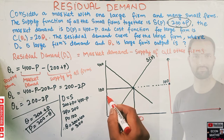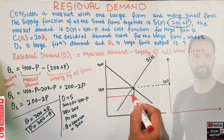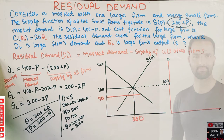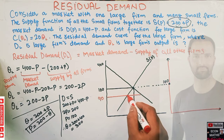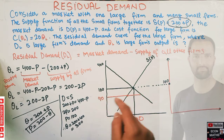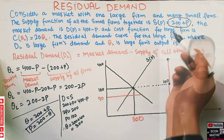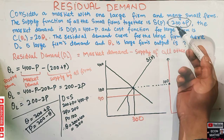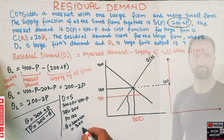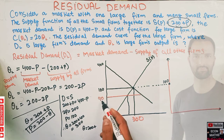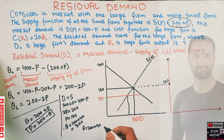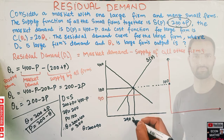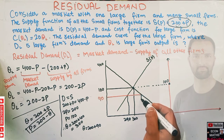Let's take another point. When price equals 90, the quantity supplied by smaller firms is Q = 200 + 90 = 290.